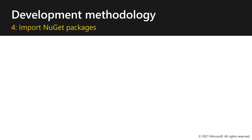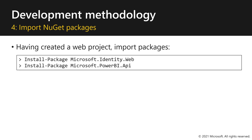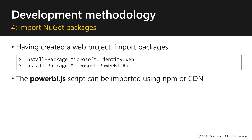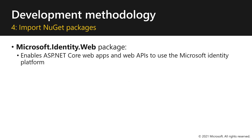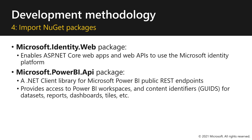Now we've arrived at stage four of the development methodology: importing NuGet packages. Once you've created a web project, you can import the Microsoft Identity Web Package and the Microsoft Power BI API Package. The Power BI JS script can be imported using NPM or CDN. The Microsoft Identity Web Package enables ASP.NET Core Web Apps and Web APIs to use the Microsoft Identity Platform. The Microsoft Power BI API Package is a .NET client library providing access to Power BI workspaces and content identifiers for datasets, reports, dashboards, and tiles.